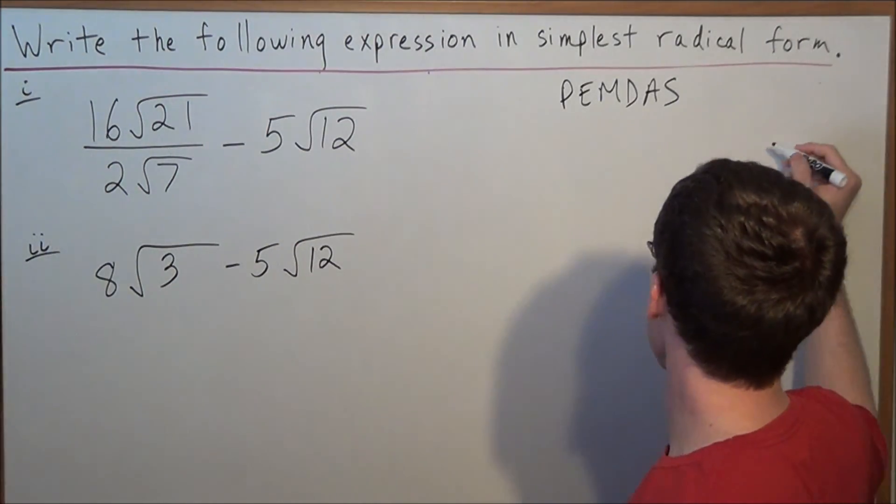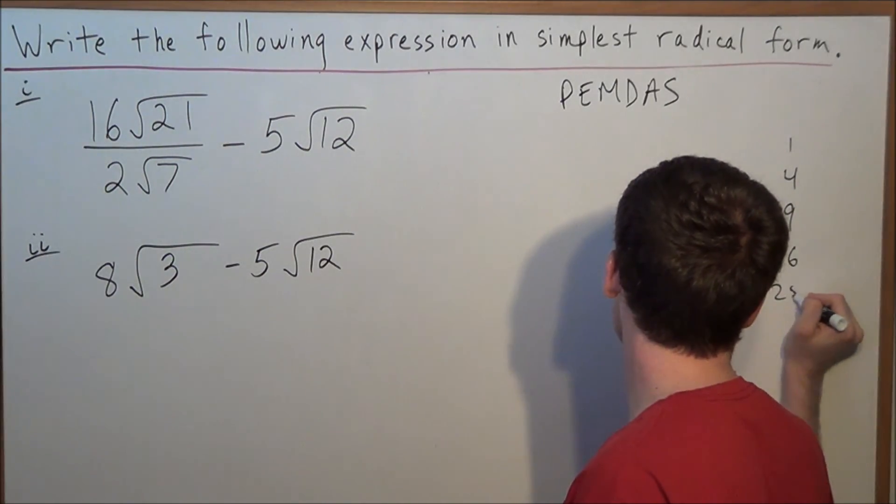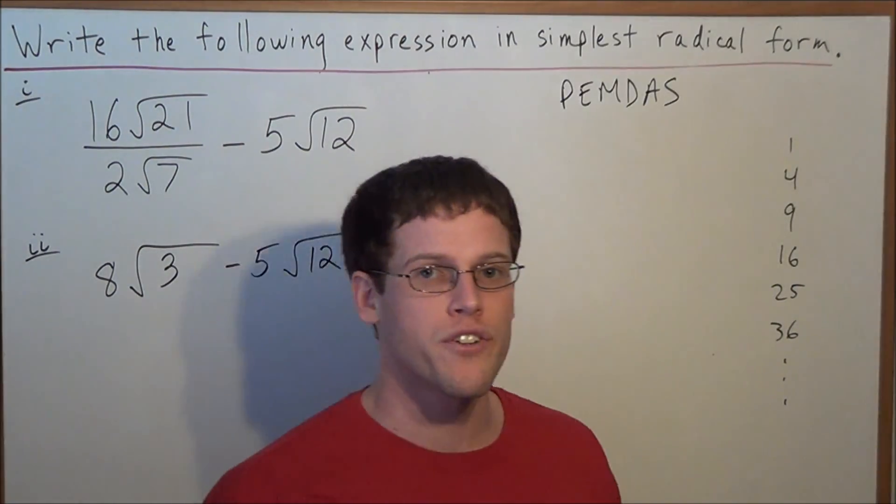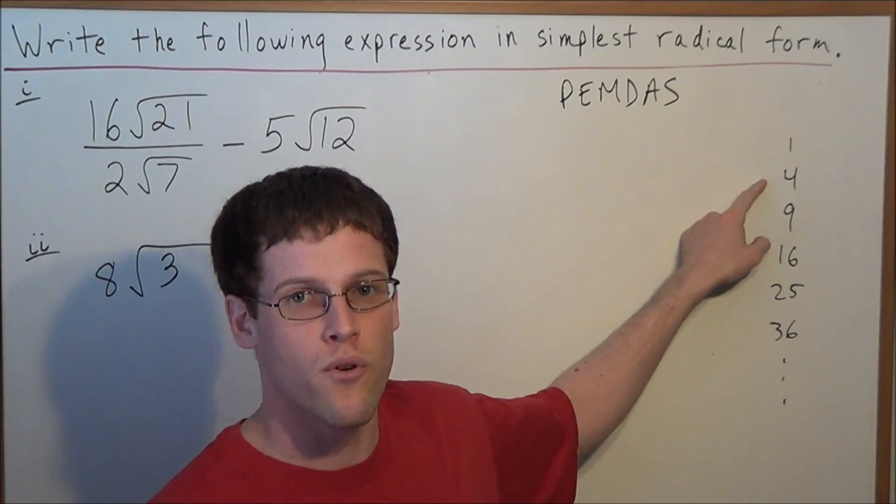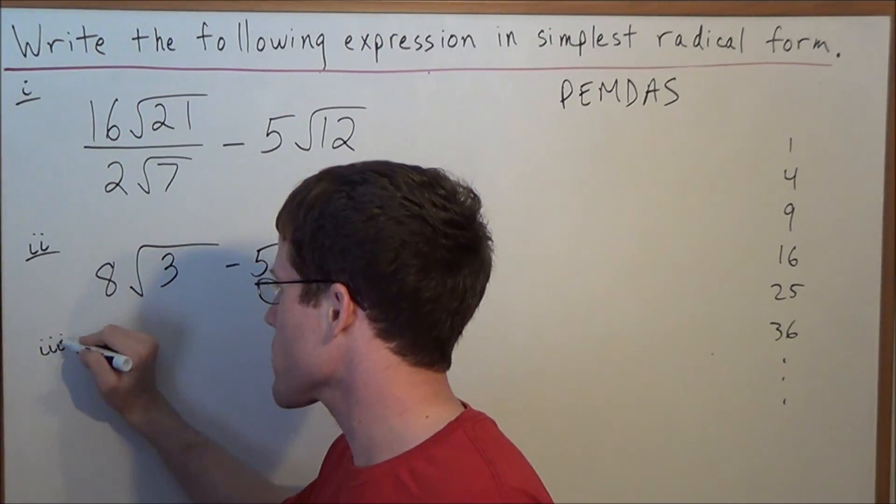And the way we're going to do that is we always refer to the perfect squares. Now this list will go on infinitely, but for a number like 12, we need to find the largest perfect square factor of 12, and in this case it's going to be 4. So now for the next line, we're going to simplify radical 12.